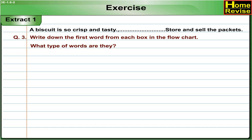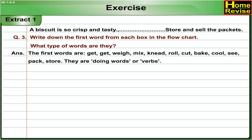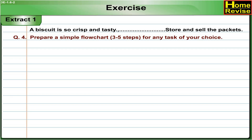Question 3: Write down the first word from each box in the flow chart. What type of words are they? Answer — The first words are: Get, Get, Weigh, Mix, Knead, Roll, Cut, Bake, Cool, See, Pack, Store. They are doing words, or verbs.